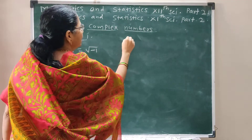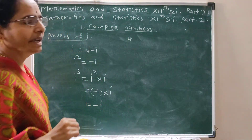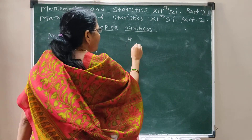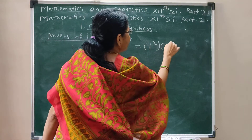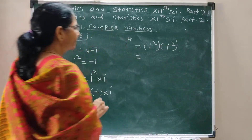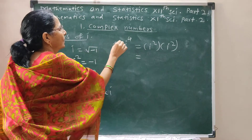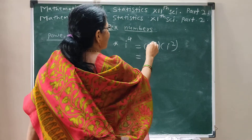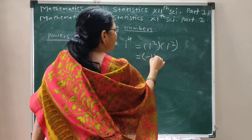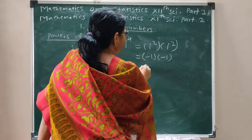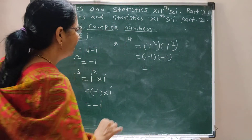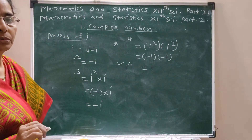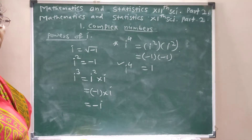Next, very important: i raised to 4. The value of i to the power 4 is i squared times i squared, which is minus 1 times minus 1, and the product is 1. So always remember: i raised to 4 equals 1. We use this value many times when solving questions.